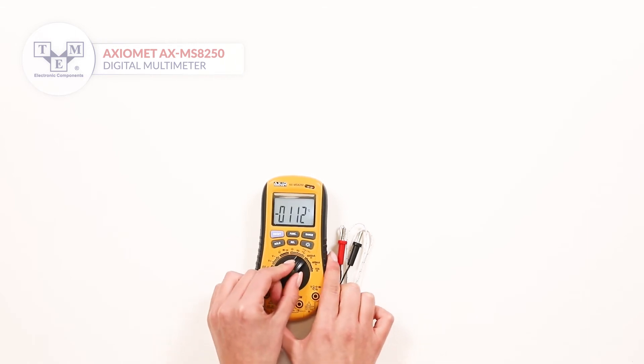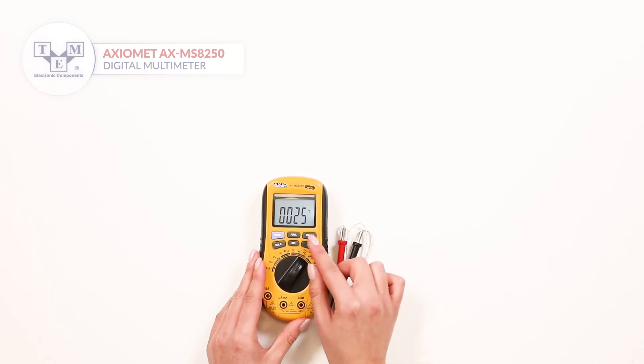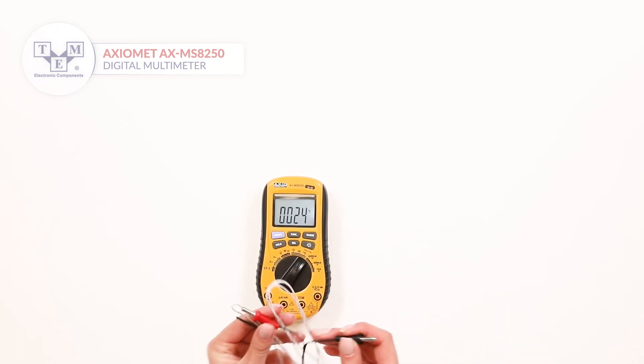For temperature measurements set the switch to C position. The ambient temperature will be displayed. Use the provided K-type thermocouple for other temperature measurements.